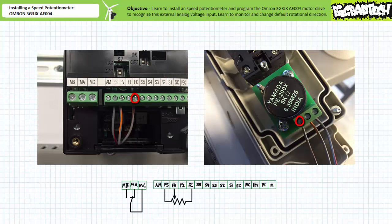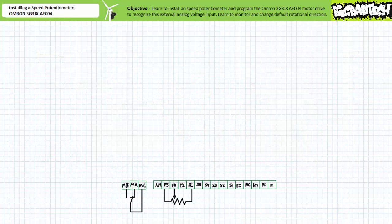We'll start by wiring the C terminal of the external speed potentiometer to the common FC terminal, the A terminal to the positive 10-volt source FS, and the adjustable B terminal to the analog voltage input FV. We now need to energize and program the motor drive to recognize and respond to this external remote input, rather than the default direct control of excitation frequency provided by the frequency adjustment knob in the digital operator group.